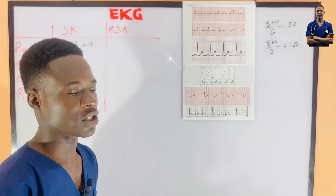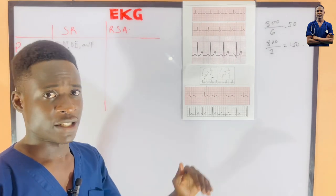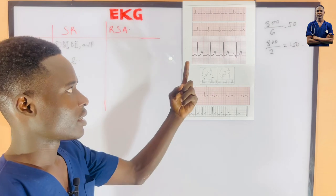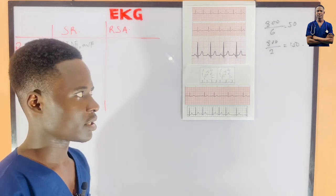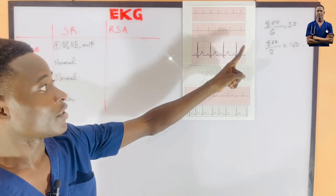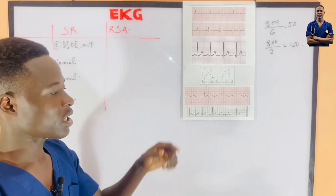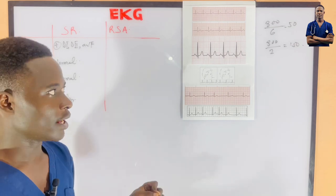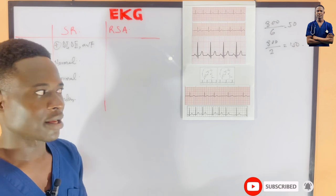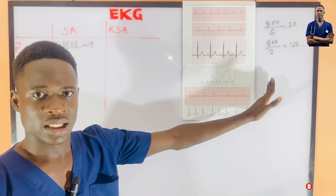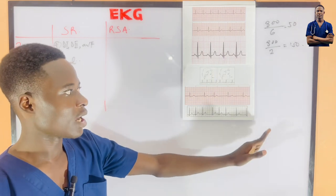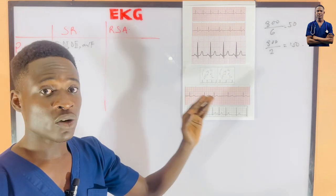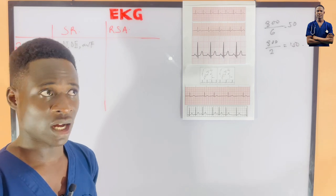So tachycardia is when the rate is more than 100, and bradycardia is when it is less than 60. There are conditions in which a sinus rhythm can be in a bradycardia state: when a person has hypothermia they get bradycardia; when a person has hypothyroidism they also get bradycardia; and when a person is using certain drugs like beta blockers or digoxin, they also develop bradycardia.